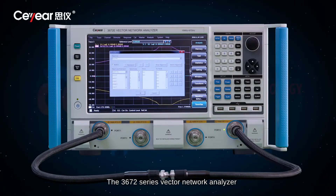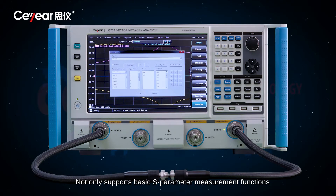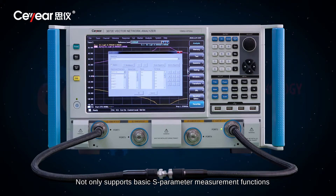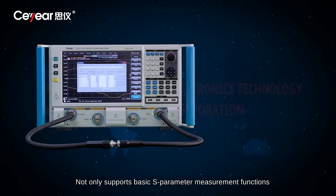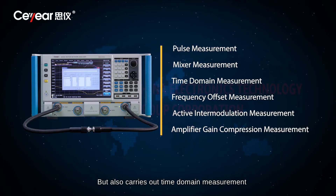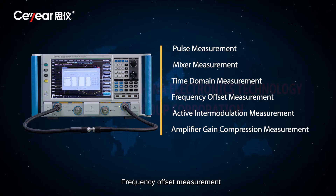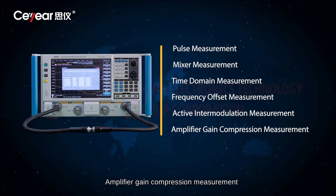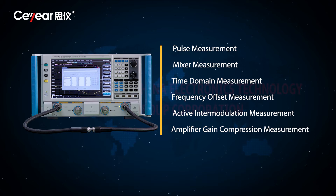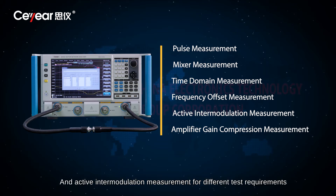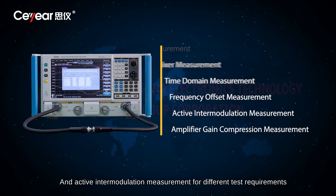The 3672 series Vector Network Analyzer not only supports basic S-parameter measurement functions, but also carries out time domain measurement, pulse measurement, frequency offset measurement, amplifier gain compression measurement, mixer measurement, and active intermodulation measurement for different test requirements.